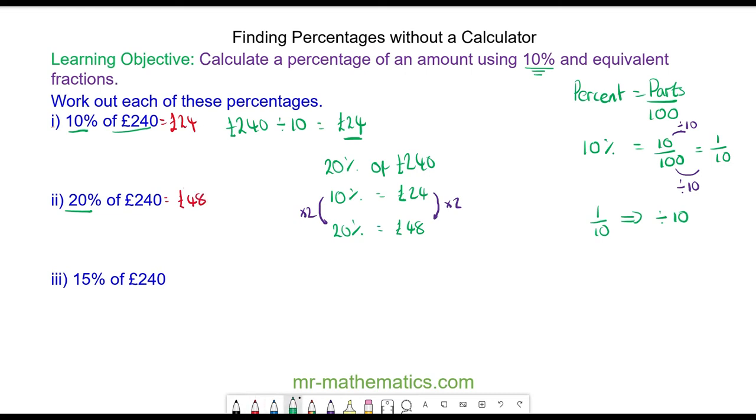For part 3, we can work out 15% of £240 because we know 10% is equal to £24. By adding on another 5%, we will have 15%. To get 5% from 10%, we need to divide by 2, so we'll do the same to both sides. 24 divided by 2 is £12, and we add them together to get 15%, which is going to be £36. So 15% of £240 is £36.